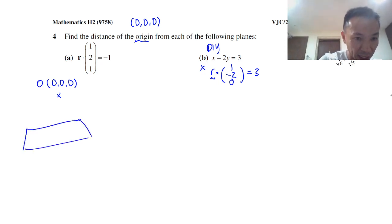And you basically want to find the shortest distance between the point O and the plane, where this plane is r dot (1,2,1) equals -1. So you treat this no differently. Even if it's (1,2,3), it's the same method.